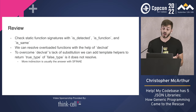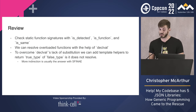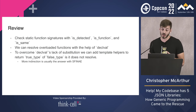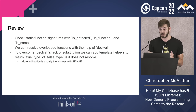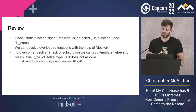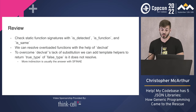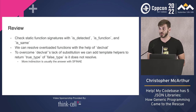Just a quick review: to check static functions, you can use is_detected, is_function, and is_same — that's what we put under the hood of our is_signature. You can resolve overloaded functions with the help of declval. To overcome declval's lack of substitution, you can add template helpers to return true_type or false_type. The answer to declval is adding more indirection — which is almost always going to be the answer when you work with SFINAE.